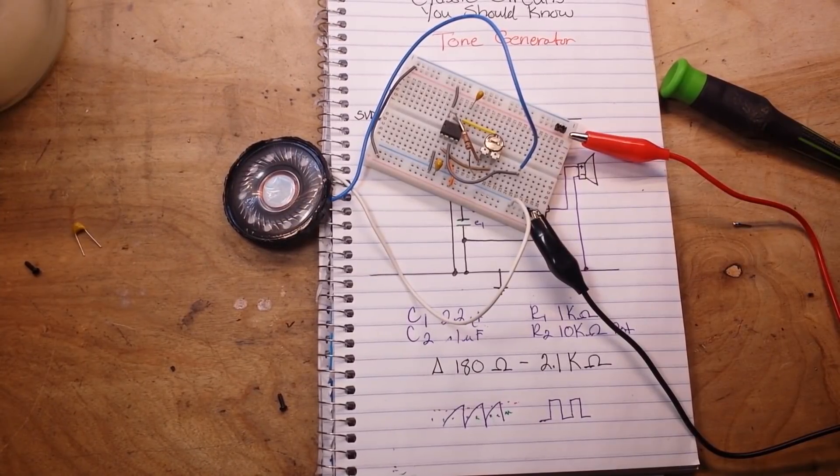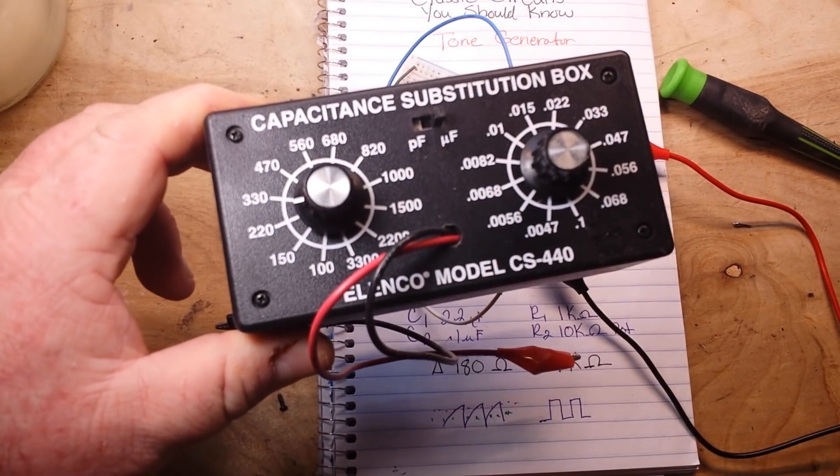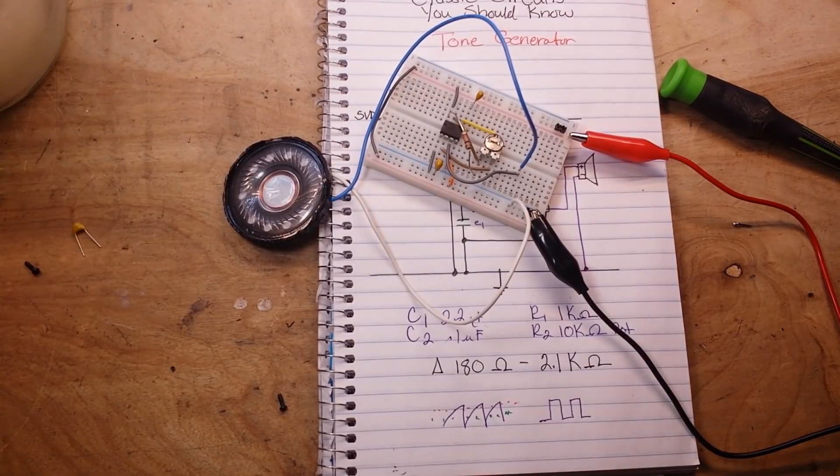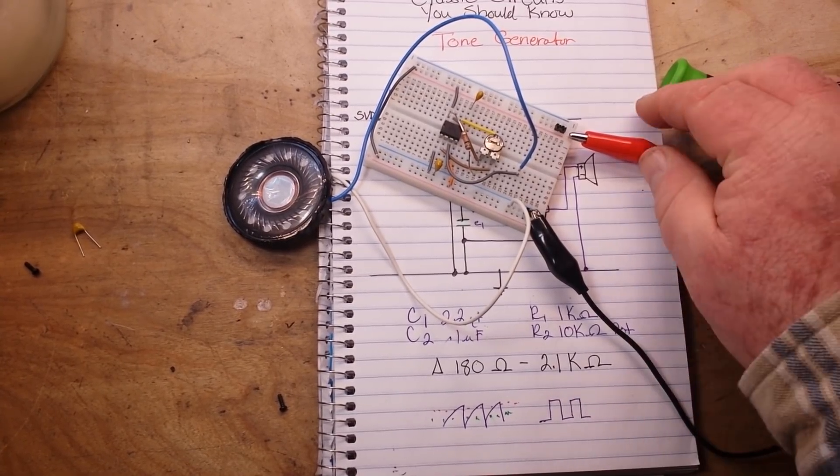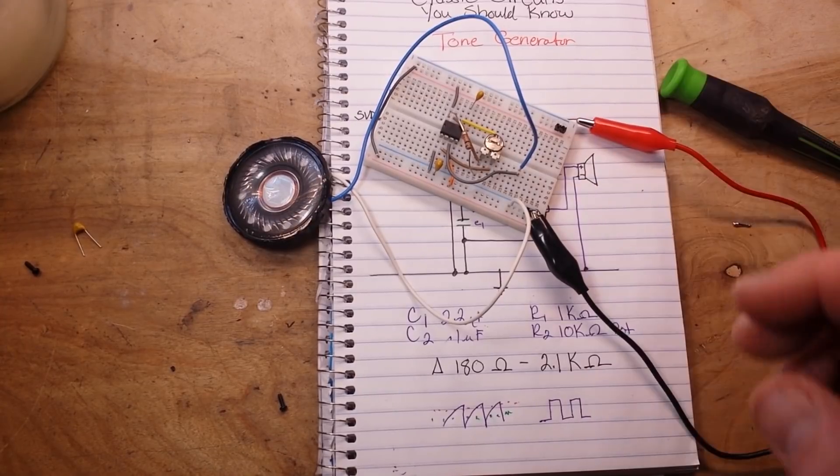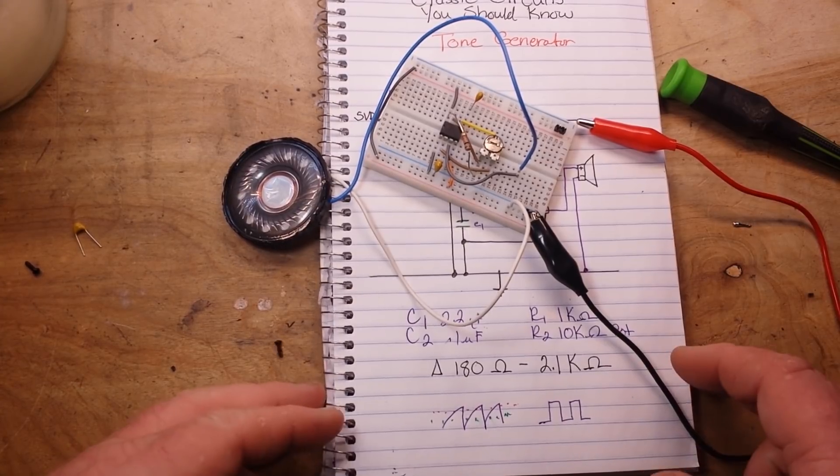You could put a variable cap on there or you could even go with something like this, variable capacitance box and make yourself a completely variable thing but it's not necessary. This is just a simple tone generator, you know basically it's a clock generator, it's whatever you need it to be and that is the beauty of the 555 timer it is just so versatile. You can do whatever you want with it but anyway this is a classic circuit you should know.